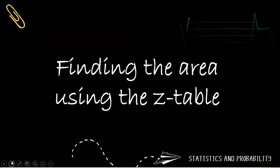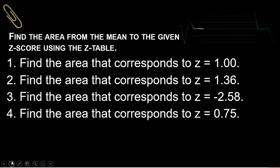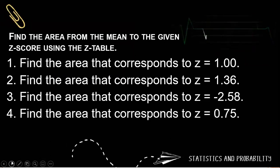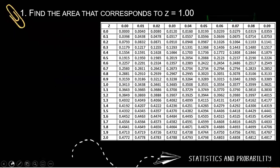Now let's have examples in finding the area using the Z table. So find the area from the mean to the given Z score using the Z table. First, Z equals 1. Second, Z equals 1.36. Third, Z is equal to negative 2.58. And fourth one, we have Z equals negative 0.75. So let us answer this one.